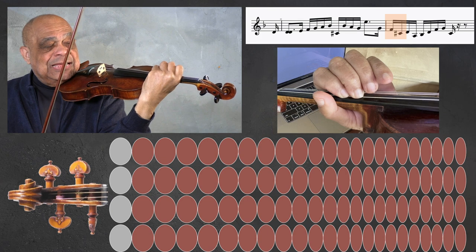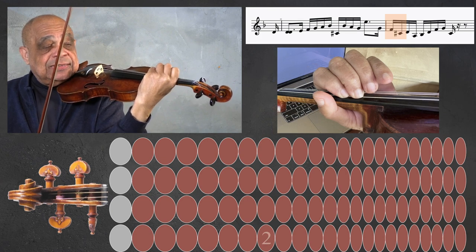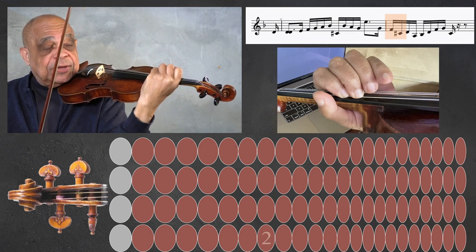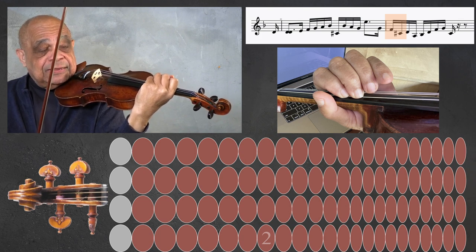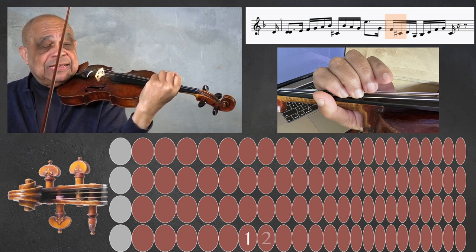Now let the second finger slightly touch the G string because it's going to act as a guide for our first finger to find the C sharp.